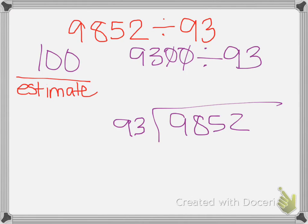Now it wants you to actually solve. So 93 goes into 98 one time. 1 times 93 is 93, subtract 5, bring down 5. 93 goes into 55 zero times, so you have to do that zero. So then we bring down the 2.